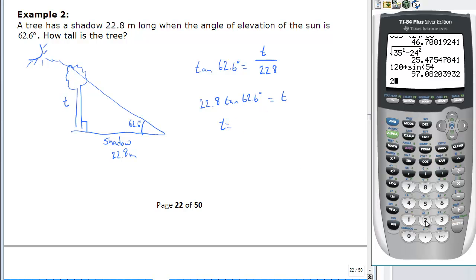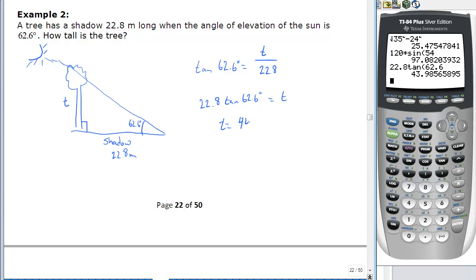That tells us then that the tree is 22.8 tan 62.6, which equals 43.99. We're going to use three significant digits, so 44.0 meters tall.